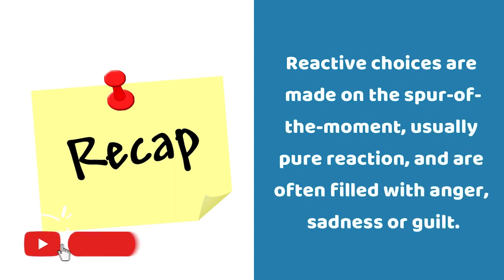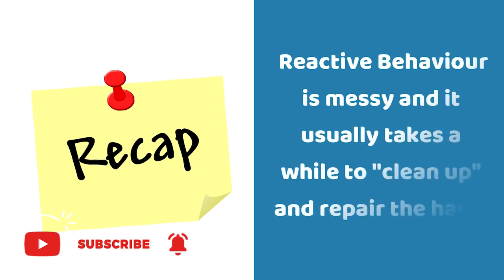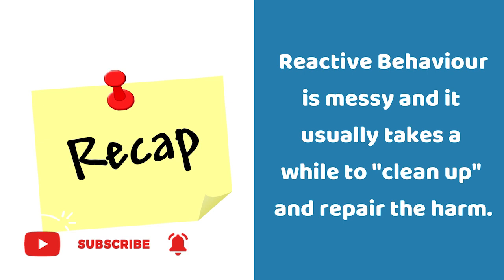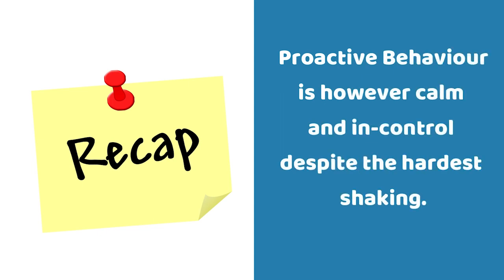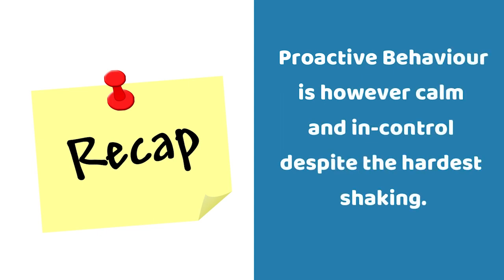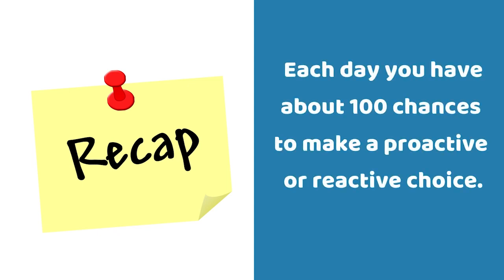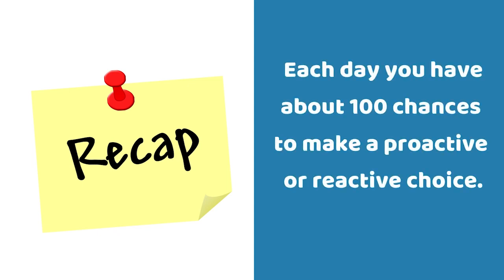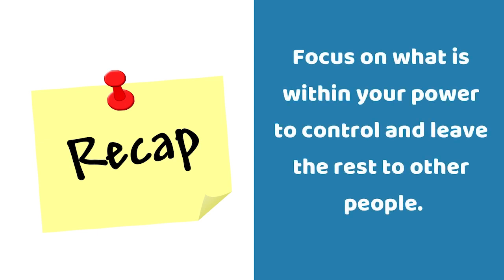Reactive choices are made on the spur of the moment, usually pure reaction, and are often filled with anger, sadness, or guilt. Reactive behavior is messy and it usually takes a while to clean up and repair the harm. Proactive behavior is however calm and in control despite the hardest shaking. Each day you have about 100 chances to make a proactive or reactive choice.